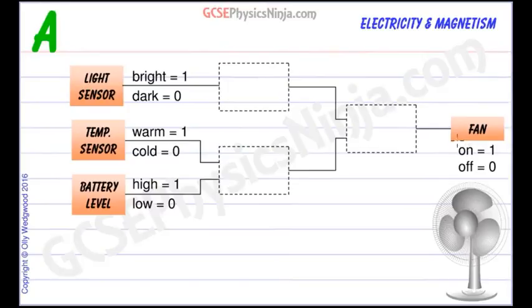So first of all let's highlight what we need. We need the fan to switch on if the room is dark and the room is too warm and the battery is charged.